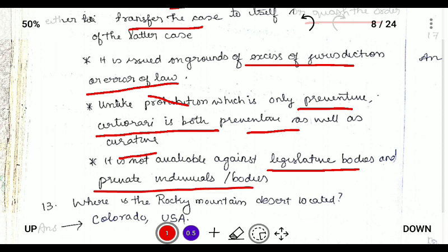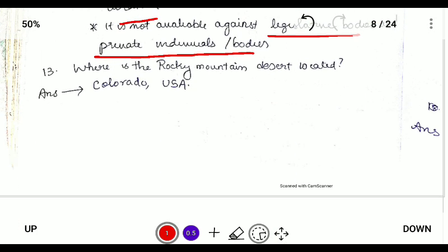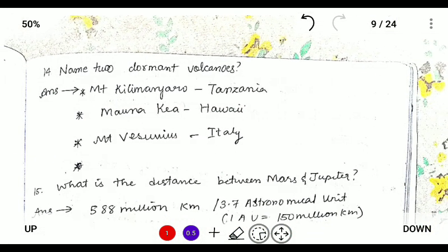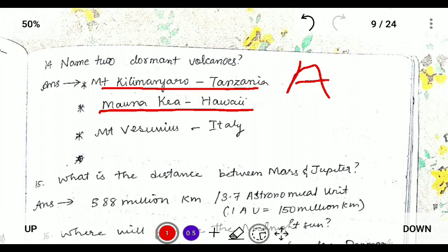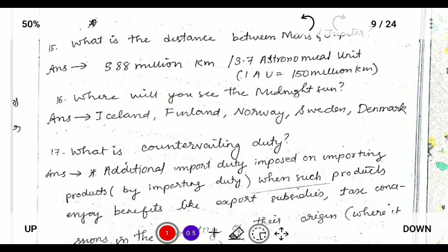Next: where is the Rocky Mountain? It is in Colorado, United States of America. Next: name two dormant volcanoes. They are Mount Kilimanjaro in Tanzania, Africa, and Mount Mauna Kea. The distance between Mars and Jupiter is 588 million kilometers.